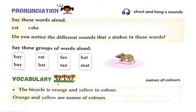Now, vocabulary. The bicycle is orange and yellow in color — orange and yellow are names of colors. This we have done in the last lecture, the color's names. So it is the names of colors. Orange and yellow are names of colors. Which colors did we learn? We learned gray, green, orange.